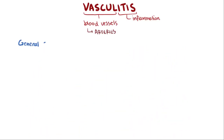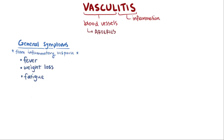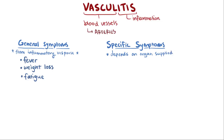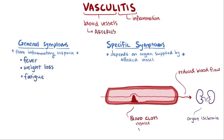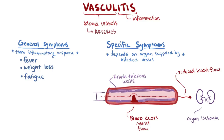People with vasculitis have generalized symptoms caused by the inflammatory response, like fever, weight loss, and fatigue. More specific symptoms occur based on where in the body the vasculitis is occurring and which organ is supplied by that blood vessel. Vasculitis causes reduced blood flow to organs — called organ ischemia — which can happen in two ways: blood clots forming on exposed tissue factor and collagen, or fibrin deposited in vessel walls making them thicker and bulging into the lumen, reducing diameter and restricting blood flow.